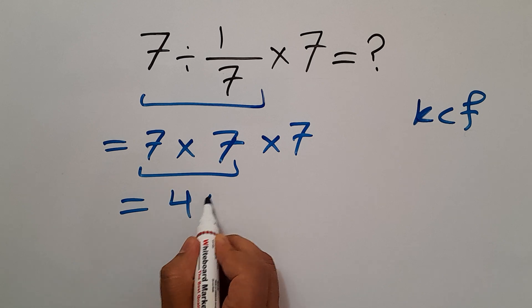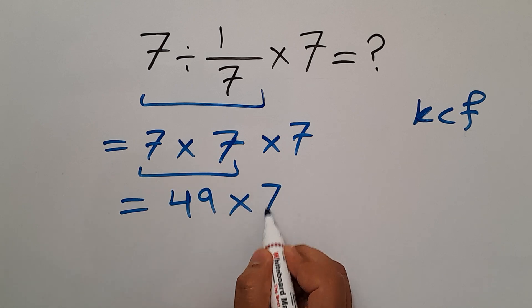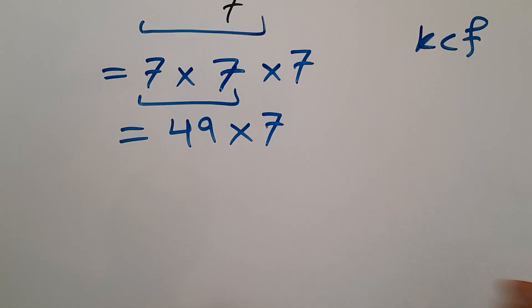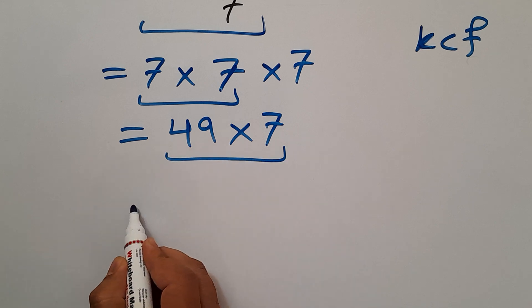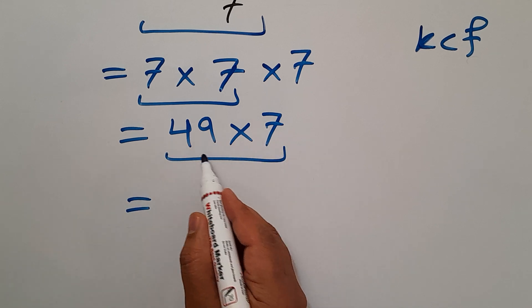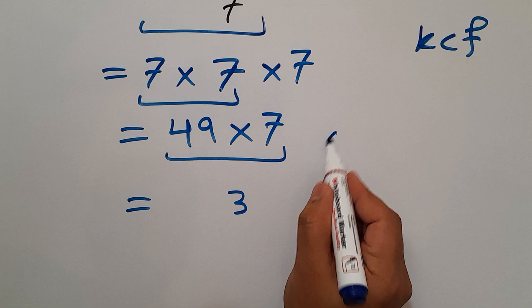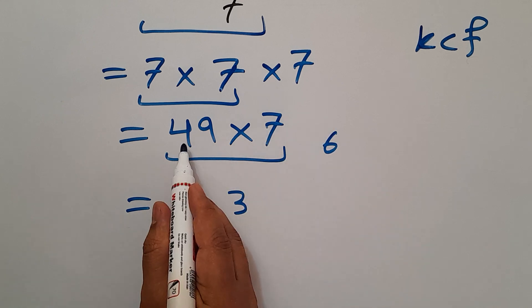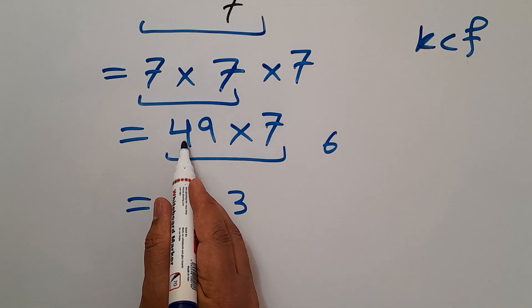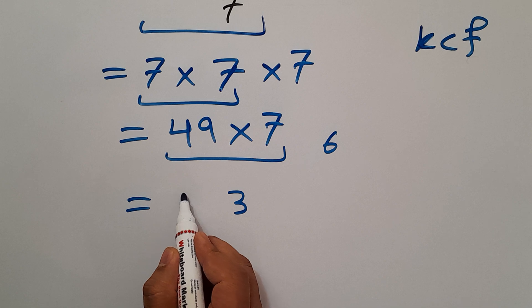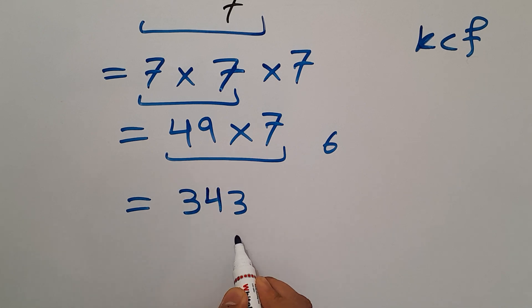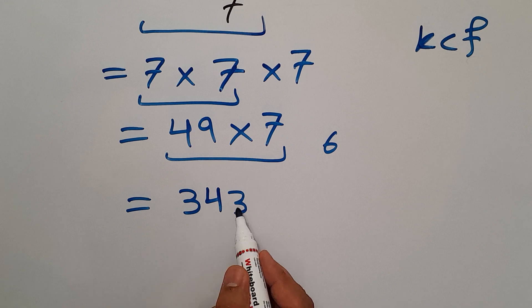And 49 times 7 equals: 7 times 9 equals 63, so 3, and 7 times 4 equals 28, 28 plus 6 gives us 34. So our final answer to this problem is 343.